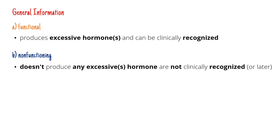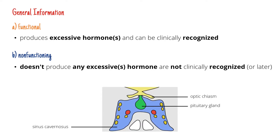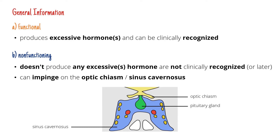But if you have a non-functioning macro adenoma — a tumor larger than 1 cm that doesn't produce any hormones — it can of course grow, and you know that there's not a lot of space around the pituitary. There's the optic chiasm, there's the cavernous sinus with cranial nerves, and if the tumor gets big enough it can start to impinge on them. So even though the patient has no typical symptoms of hormonal imbalances, they can suffer from headaches, vision problems, and much more.